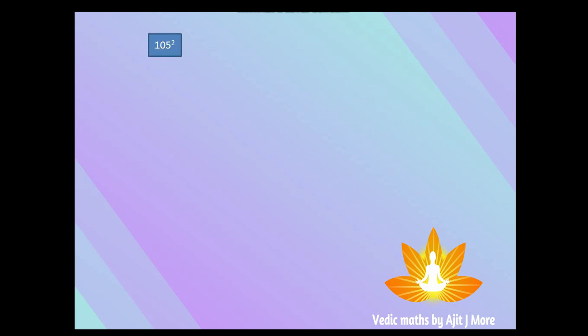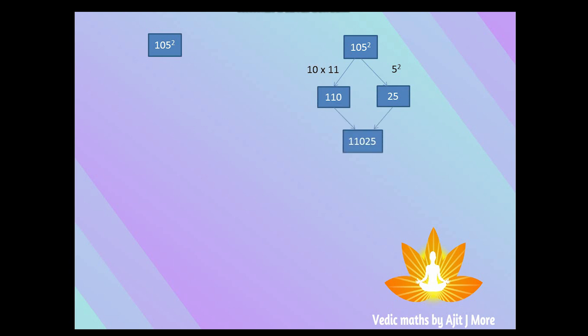Let's find the square of 105. What comes before 5? That is 10. What comes after 10? Eleven. Ten into eleven is 110. Five squared is 25. Combine both — that is 11025. So 105 squared is 11025. Quite easy! In a subsequent session we'll also see how to multiply a number by 11.